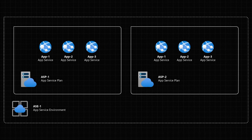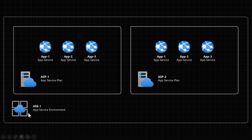Now let's look at App Service environments. Within an App Service environment, or ASE, we can have multiple App Service plans. You can think of an App Service environment as a very powerful, dedicated server that only hosts your App Service plans or your App Services. With this, you have dedicated memory, CPU, and networking for your applications so that you can host your applications more securely.